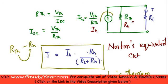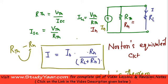And this short circuit current — how are you going to calculate it? IN is basically the short circuit current. So in order to calculate IN, what you are going to do is short circuit the terminals and find the current flowing through them.